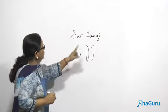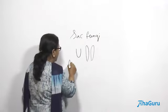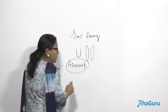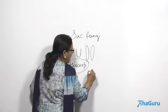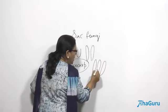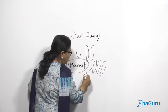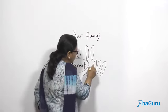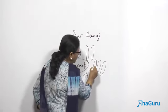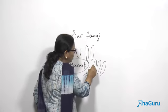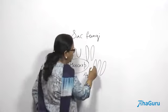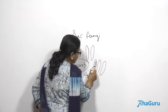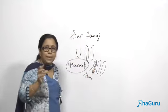The fruiting body of the sac fungi is known as ascocarp. On this ascocarp, many sacs are found, each one called an ascus (plural: asci). Inside the ascus, the nuclei unite and form a zygote, which undergoes meiosis to produce ascospores. Eight ascospores are produced per ascus.